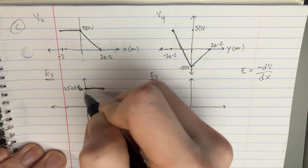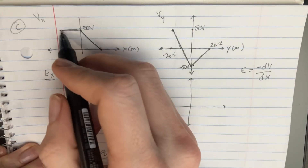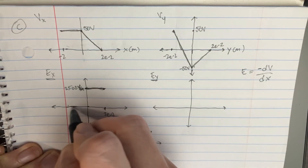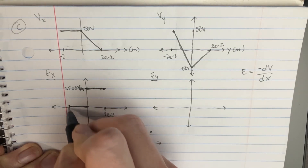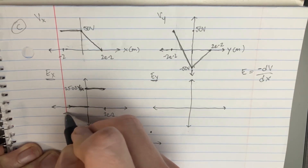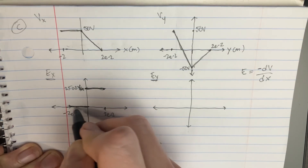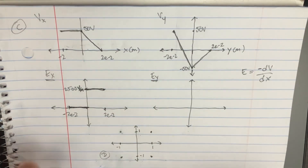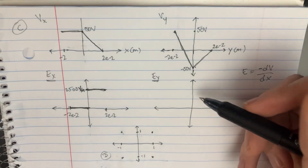Let's go back here — keeping in mind there was no change in the flat region, so that should be 0. At the negative 2 region, there's really nothing to do there. So that's nice — we've figured out Ex.